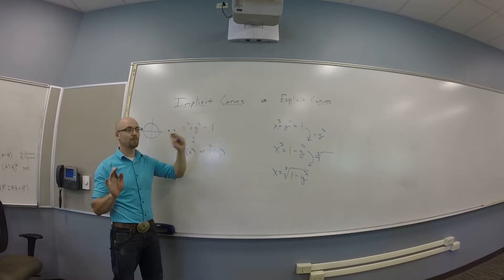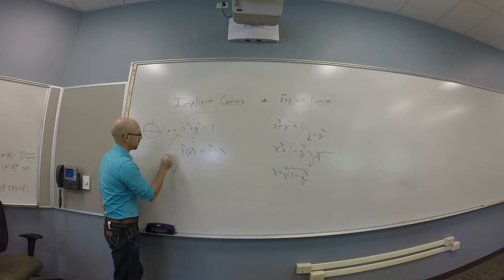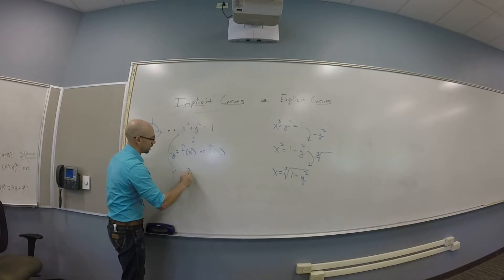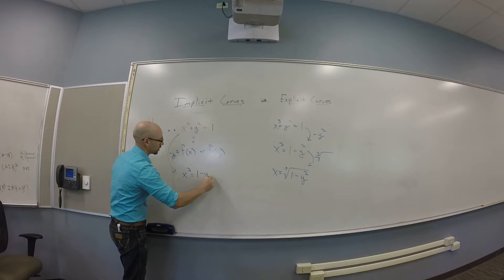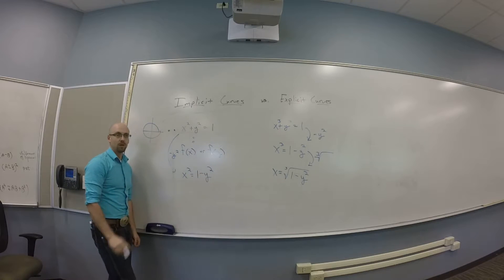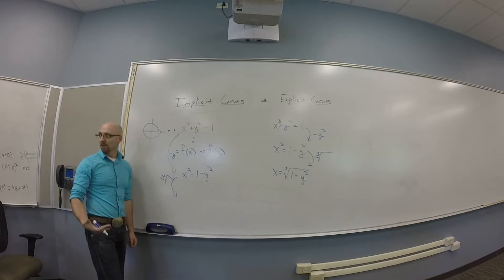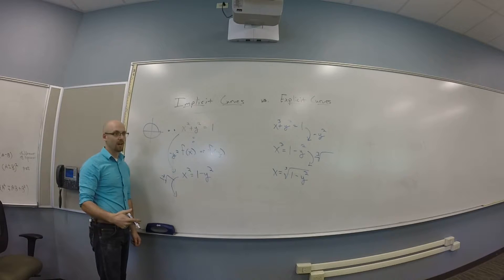And the other one, the x squared plus y squared doesn't work because if you try to do this, you subtract y squared, so I get x squared is 1 minus y squared. And then when I do that square root, I need a plus or minus. And that thing's not a function because plus or minus gives you two values.